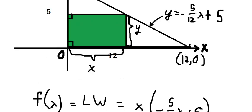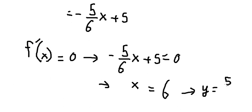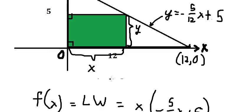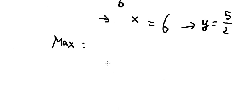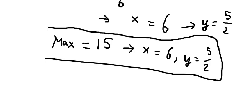With x = 6, we substitute back into the line equation to find y = 5/2. Then the maximum area is 6 times 5/2, which equals 15. So the maximum area of the rectangle is 15, when x equals 6 and y equals 5/2. Thank you for watching.